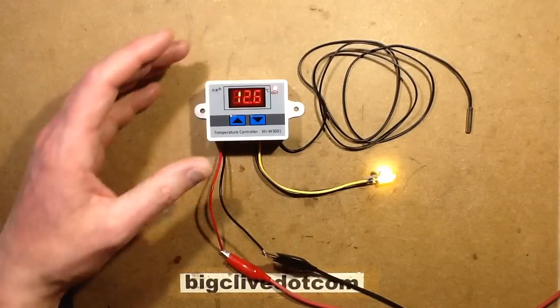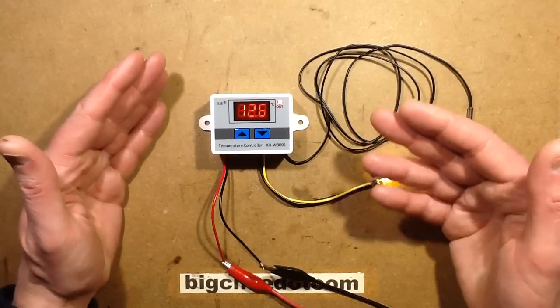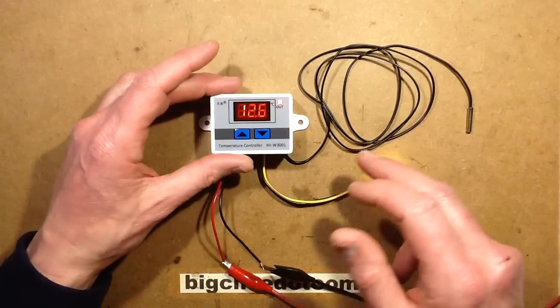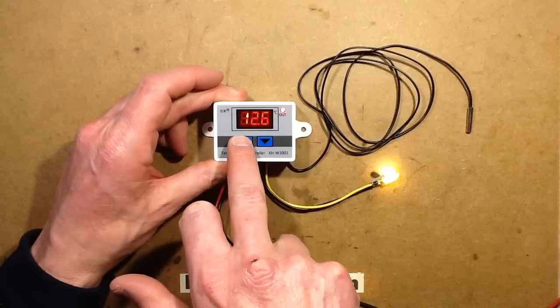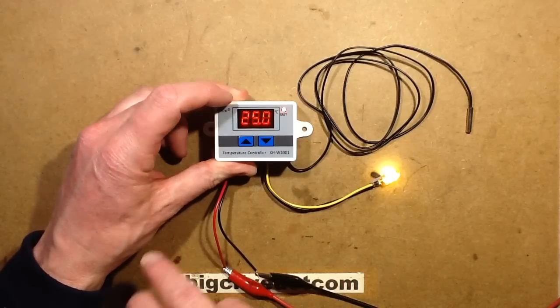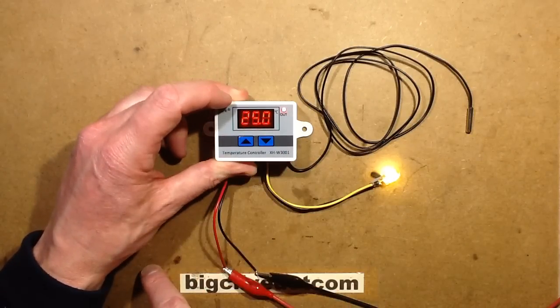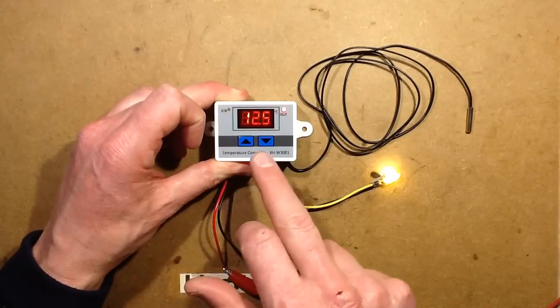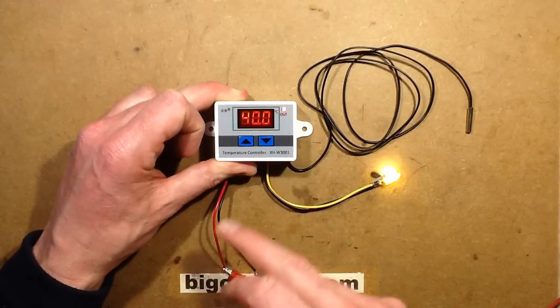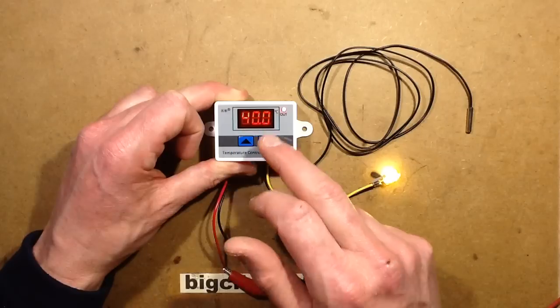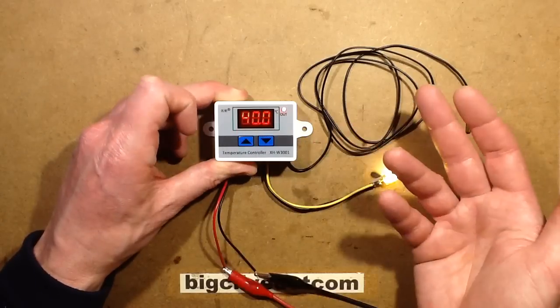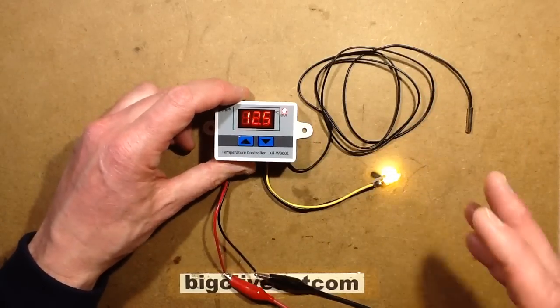The module just has two buttons and you can use it for heating or cooling and it's very simple. If you press the left-hand button, that's the start temperature. In this case, its default as it comes is 25 degrees Celsius.